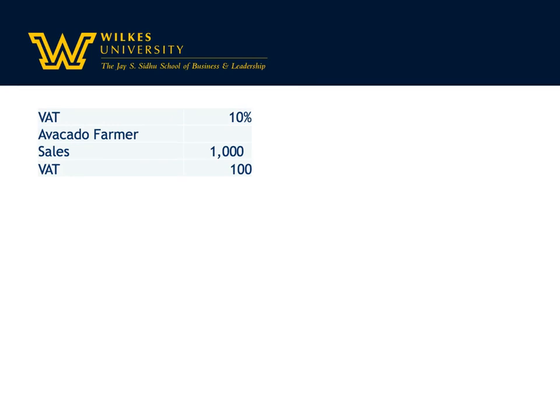The value-added tax is a little different because it's collected at different points along the way. For our example, imagine an avocado farmer is selling to a grocery store — their sales are $1,000 and the tax is $100. So the avocado farmer debits cash for $1,100, credits sales revenue for $1,000, and credits VAT payable — very similar to sales tax payable — for $100.